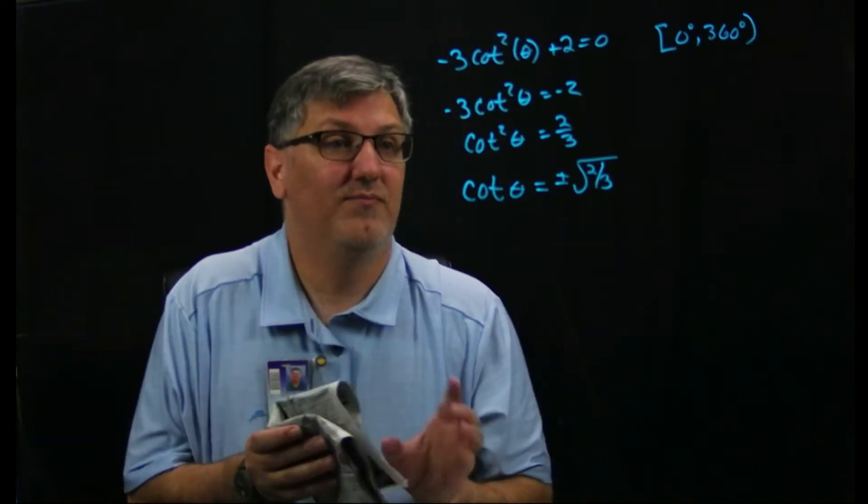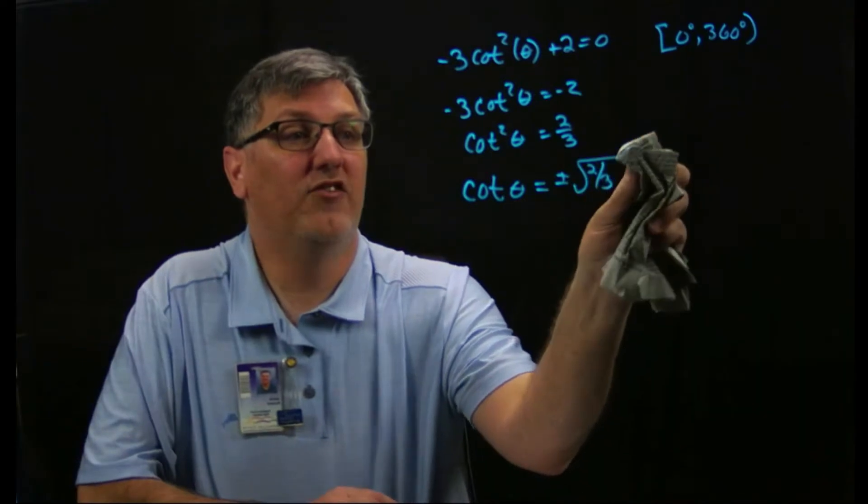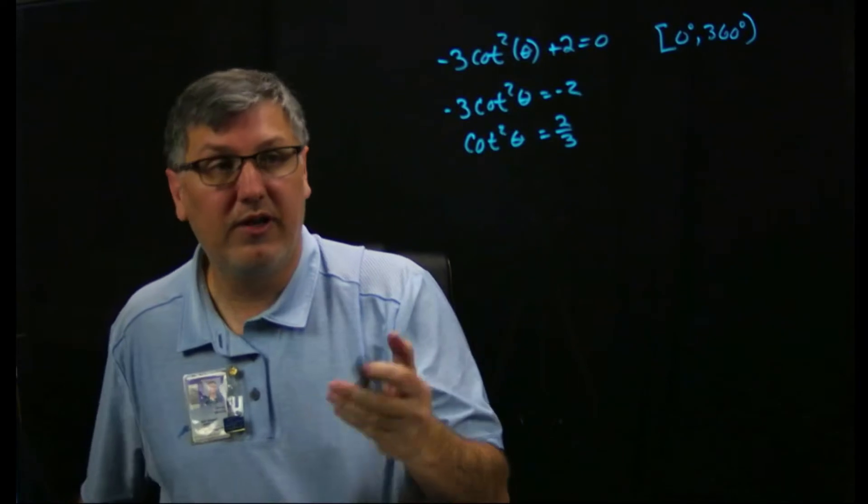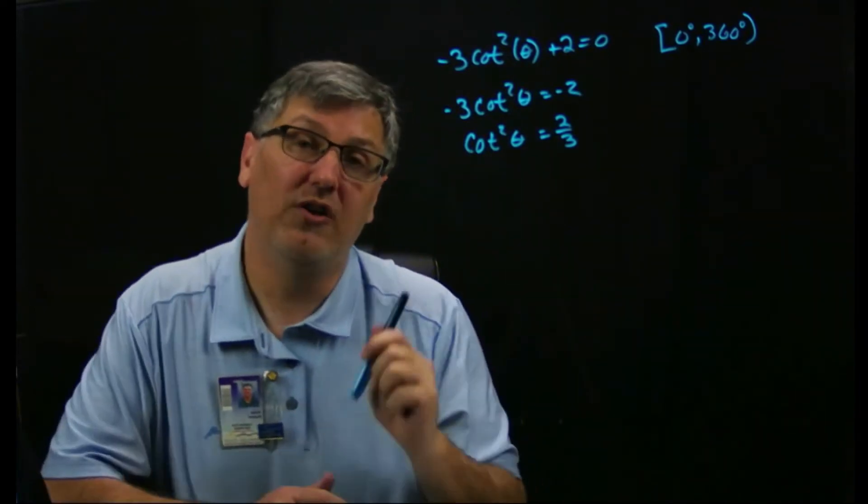You need to back up one step. It'll make it easier for y'all to see. So before I take the square root I'm going to do something. I'm going to get rid of this cotangent and we'll show you how I get rid of the cotangent.